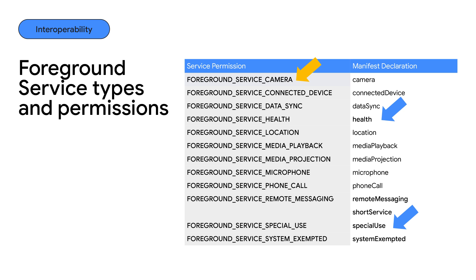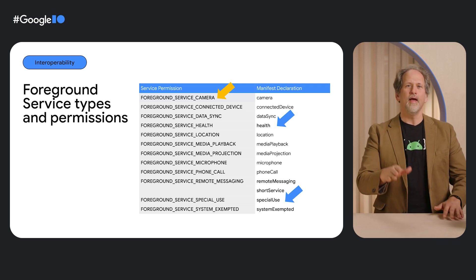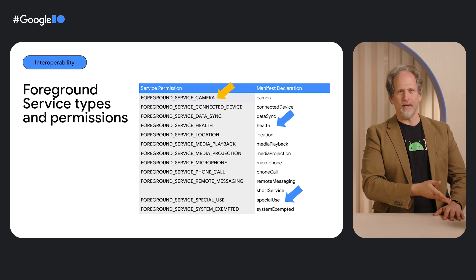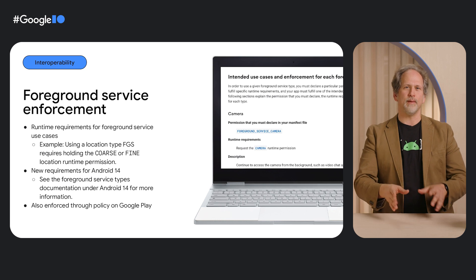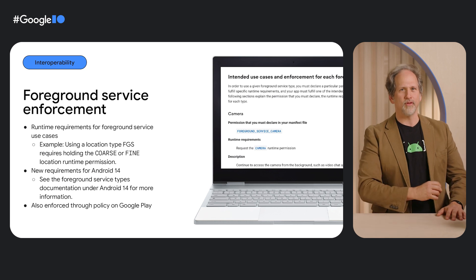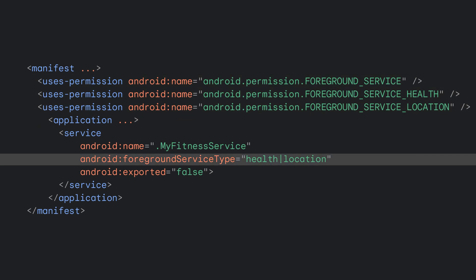Service permissions and some of the types are new. Apps that target Android 14 need to declare foreground service permissions based on the foreground service types they use, in addition to the core foreground service permission from API 28. Android enforces foreground service types with runtime requirements, such as holding a location runtime permission for foreground services of type location. Here's a manifest snippet for a health and/or location service. We declare normal non-runtime permissions for both types, and then we set the type to be health plus location. The service can be started as any combination of these types, and must satisfy any runtime requirements for all types it is started as.